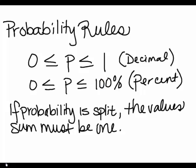Today we're going to start talking about probability. We're going to go over the probability rules. Now, probability has to be between the values of 0 and 1 if you're in decimal form, or 0 and 100% if you're in percentage.